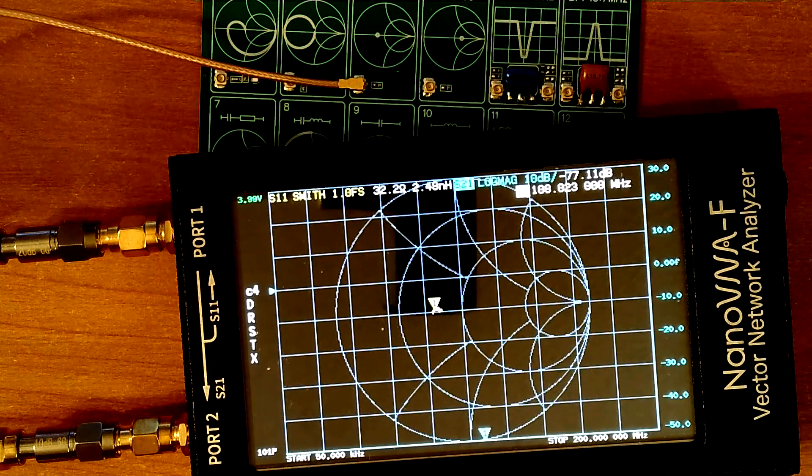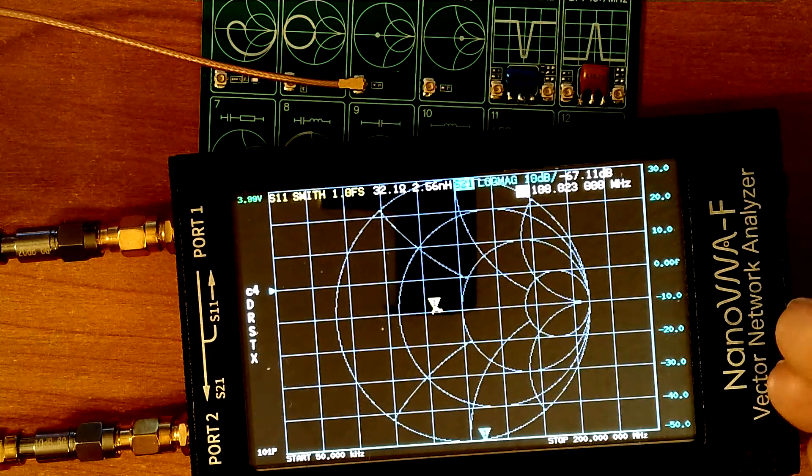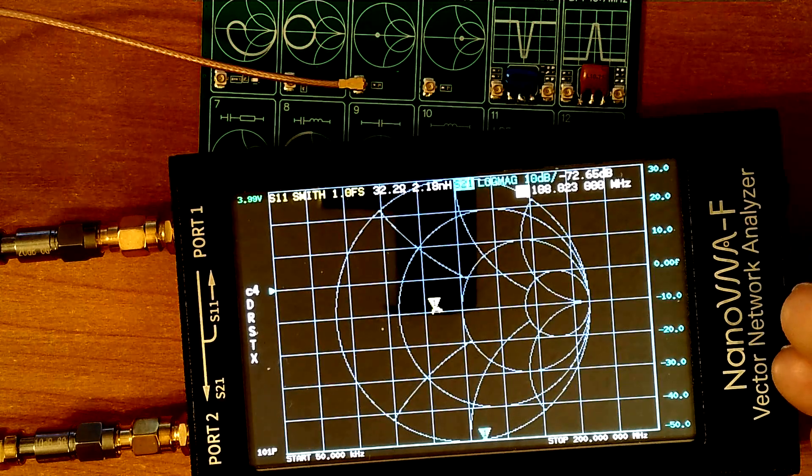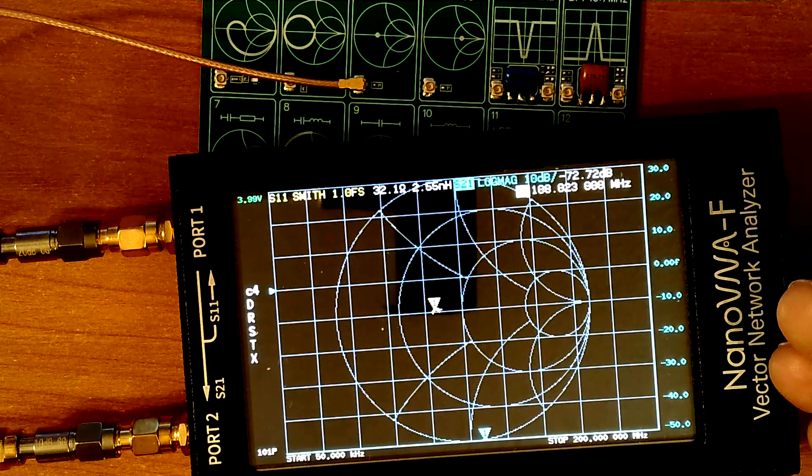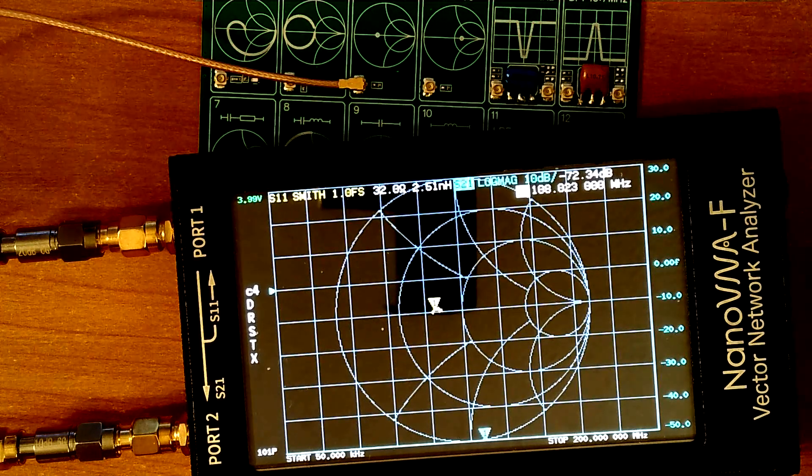And 33 ohms is here where it should be. Nearly perfect. This thing is amazing. For $55 to $140, whatever you paid for it, this is the larger screen one. I paid $140. This is an amazing instrument.